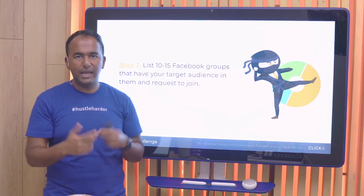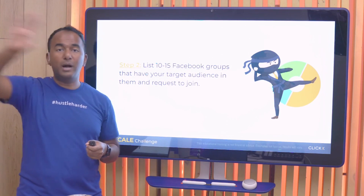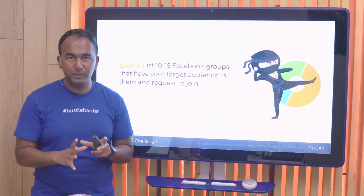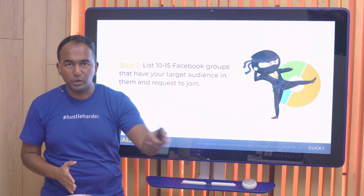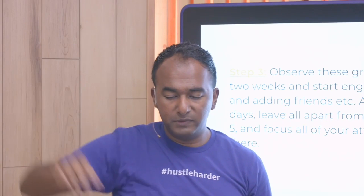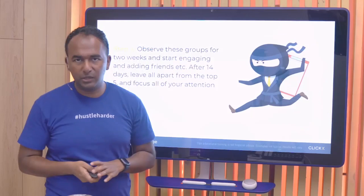Add them as a friend and say, 'Hey, what do you guys do? Love to learn more. Can we jump on a call?' The whole process works because the group is what connects like-minded people together. You're in the group, you're messaging people, and that's what it is. Observe these groups for two weeks, engage with a couple of people after 14 days, then really start focusing on five of the groups that you're in, and drop all the others that aren't engaging or worthwhile.